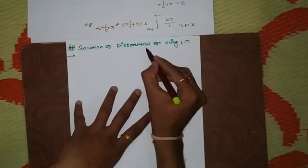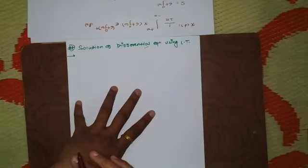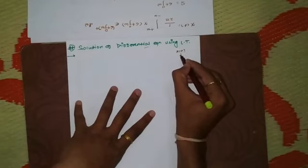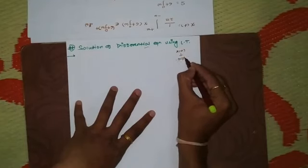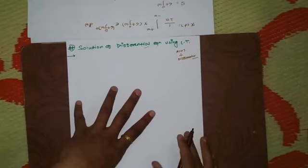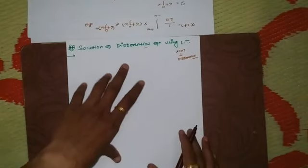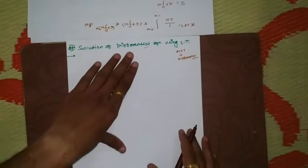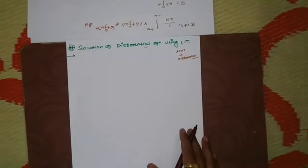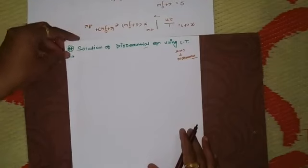they can be differentiable. When we are having a discrete time signal, they are non-differentiable, hence in this case we'll try to find solution of a differential equation. So it may be continuous time Fourier transform or Laplace transform — in these cases we'll always go for differential equations.